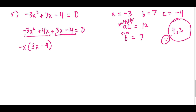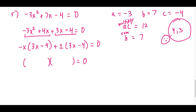Factoring the second group gives 1·(3x - 4). I encourage writing the 1 explicitly because students often forget it. Since both groups share the factor (3x - 4), we factor it out: (3x - 4)(-x + 1). Now we have successfully factored the original expression and can set each binomial equal to zero.